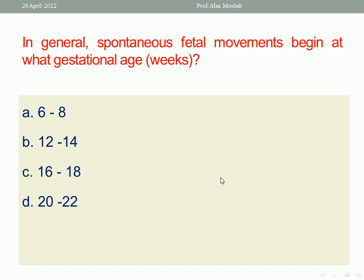You know that the multipara can feel the fetal movement earlier than a primigravida, because she has experience, so she can feel the kick earlier — between 16 to 18 weeks — while the primigravida can feel it between 18 to 20 weeks. So knowing this information, I will choose 16 to 18 weeks.